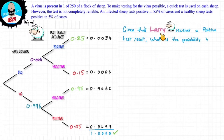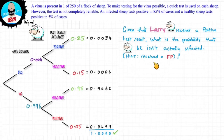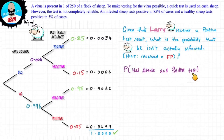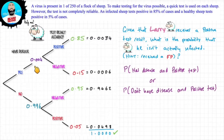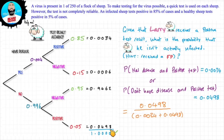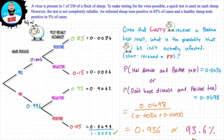Looking at another question: given that Larry receives a positive test result, what is the probability that he isn't actually infected? Here we're looking for a false positive. We consider whether Larry has the disease and tested positive, or Larry doesn't have the disease and tested positive — a yes-and-positive or a no-and-positive. Given that there is a positive test result, we add the probability of both positive outcomes but look for the outcome that Larry isn't infected. The calculation gives us 93.6%, so we have a happy Larry.